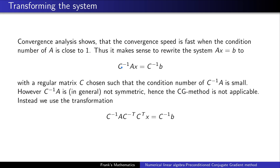So the idea is: can we solve an equivalent system which has a better condition number? For simplicity, multiply a matrix C from the left side to solve this system. In an optimal way, C should be chosen to be A⁻¹, but this is kind of useless for obvious reasons. So C should be chosen such that the condition number of C⁻¹A is small. However, we run into problems because C⁻¹ times A is usually not symmetric and far away from being positive definite, so we cannot simply apply the conjugate gradient method.